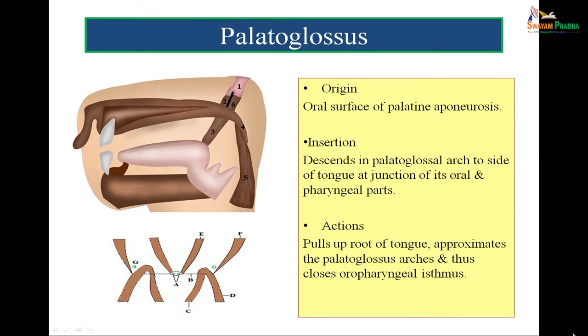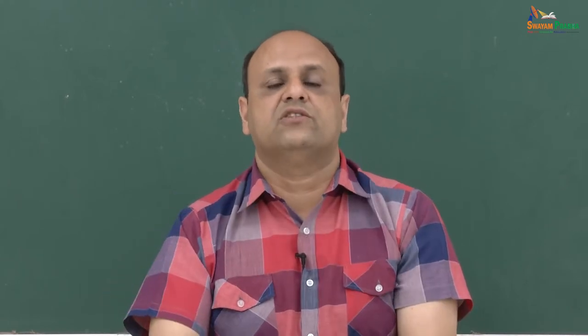The palatoglossus muscle, marked by three in the figure, arises from the oral surface of the palatine aponeurosis. It descends in the palatoglossal arch to the side of the tongue at the junction of its oral and pharyngeal parts. Since this muscle forms the anterior boundary of the tonsillar fossa, when it contracts on each side it shortens and closes the oropharyngeal isthmus. Nasopharyngeal isthmus is closed by the levator veli palatii, while the oropharyngeal isthmus is closed by the palatoglossus muscle.